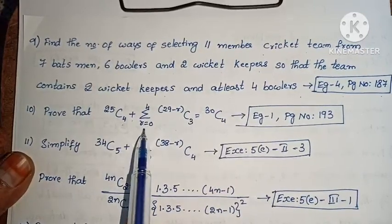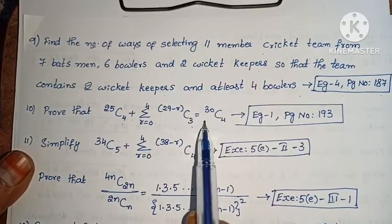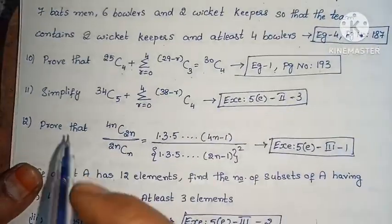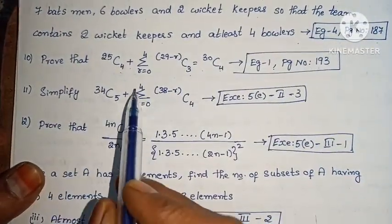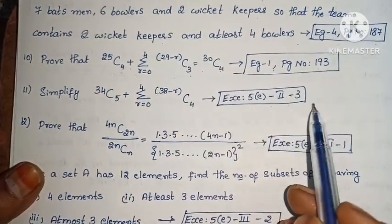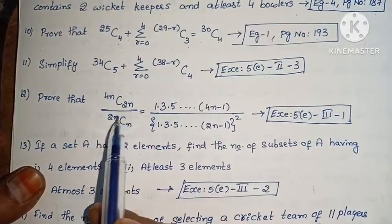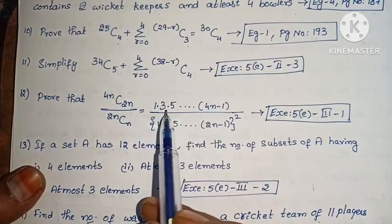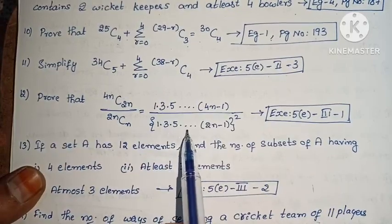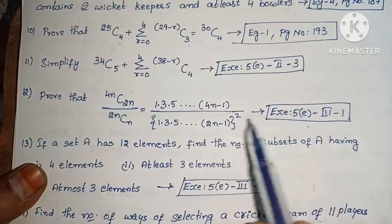Next: prove that 25C4 plus sigma (R=0 to 4) of (29 minus R)C3 equals 30C4 (Example 1, page 193). Next: simplify 34C5 plus sigma (R=0 to 4) of (38 minus R)C4 (Exercise 5, Roman II, third one). Next: prove that 4NC2N divided by 2NCn equals [1·3·5···(4N−1)] divided by [1·3·5···(2N−1)]² (Exercise 5, Roman III, first one). This question repeats in C4 question papers.